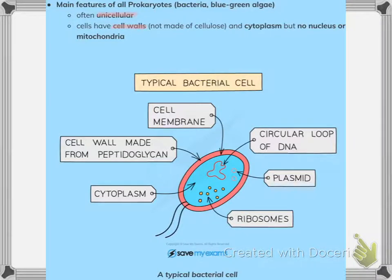Prokaryotes are unicellular and have cell walls not made from cellulose. They have cytoplasm but no nucleus or mitochondria.